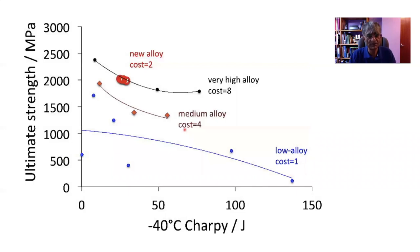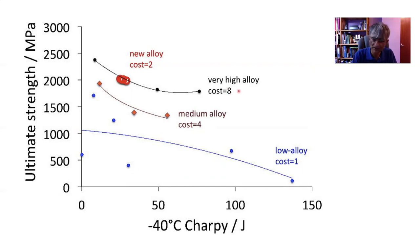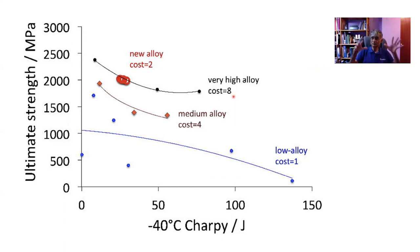Here is an approximate comparison of the cost of the alloy comparing strength and Charpy toughness at minus 40. Low alloy steels have a cost of one. As you increase the alloy content the cost goes up to four, and some steels like Airmat 100 contain large quantities of alloying additions at a cost of eight. The new alloy has a cost of two on this scale and performs on the same curve as the very expensive alloys like Airmat 100. In summary, this untempered high carbon martensite performs well, has high toughness, and is weldable.